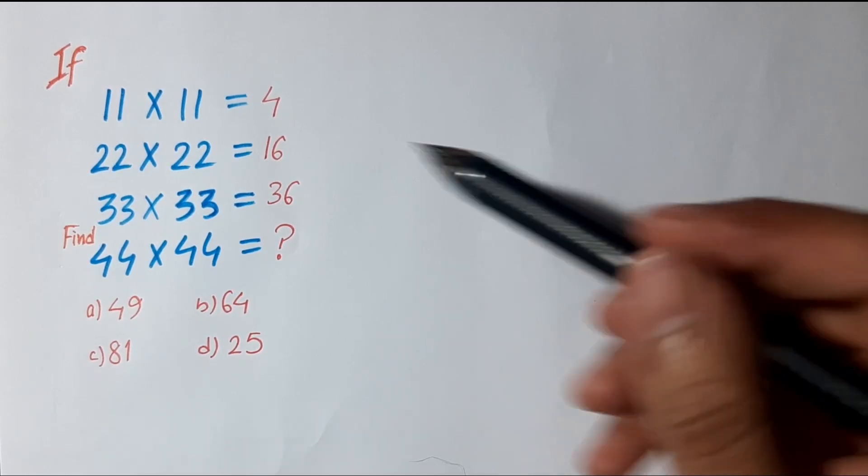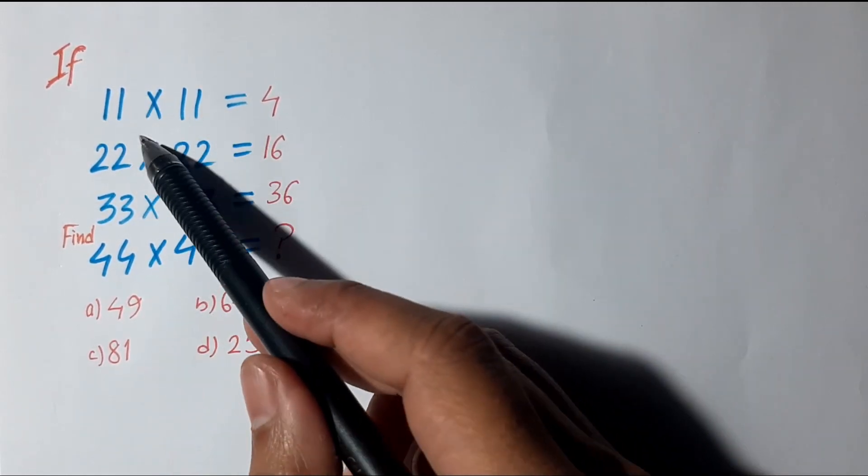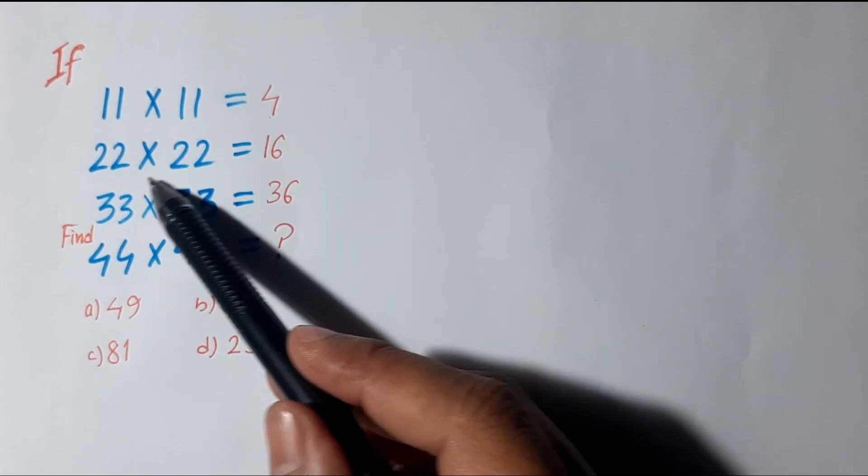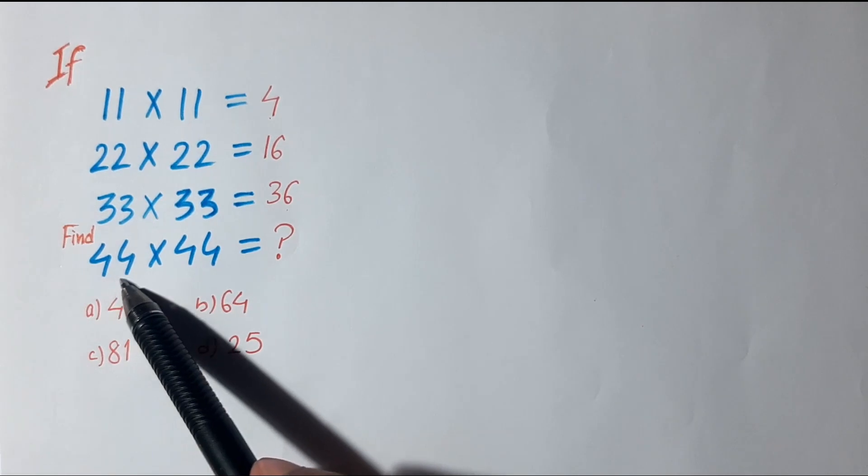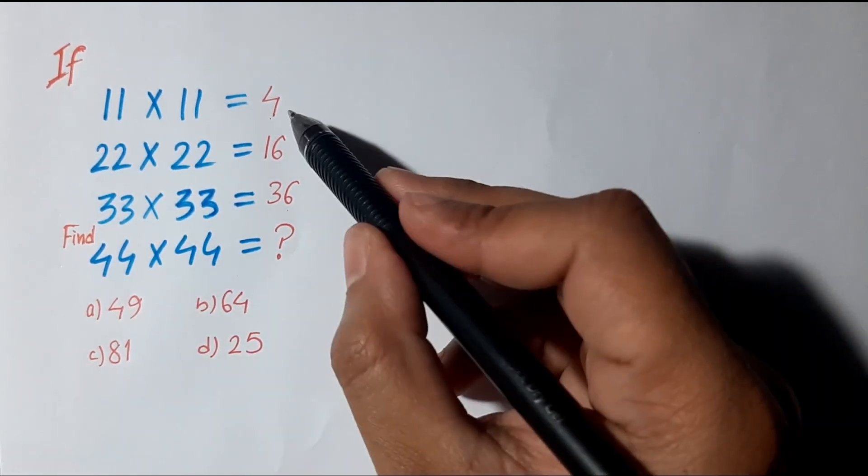Hello guys, welcome to my channel. Let's solve this reasoning problem. Given: if 11×11 = 4, 22×22 = 16, 33×33 = 36, we need to find 44×44.